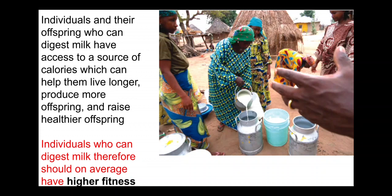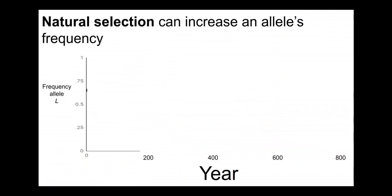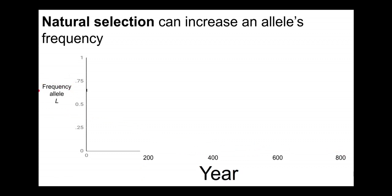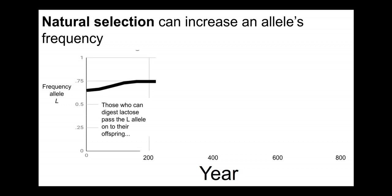This is what it would look like if we were out collecting data on the frequency of alleles related to lactose tolerance — tracking the frequency of those alleles in a population over time. The x-axis here is years, hundreds of years. The y-axis is the frequency of the big L allele, where individuals that are homozygous dominant (big L big L) or heterozygotes (big L little l) are able to digest lactose.